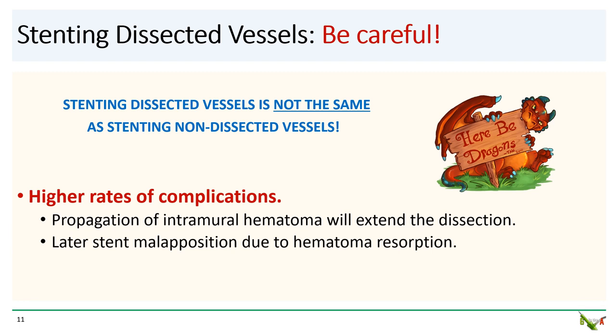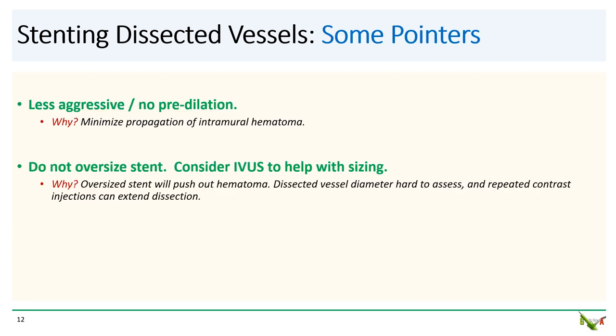Now that you have your wire in the true lumen, all you have to do is stent it up — you're pretty much home free. Well, almost, but you still have to be very careful. Stenting dissected vessels is precarious and is not the same as stenting non-dissected vessels — there is a high rate of both early and late complications. Angioplasty and stenting can cause longitudinal extension of the hematoma and propagate the dissection. Appropriately sizing the stent is important but difficult because of the intramural hematoma, and initially well-opposed stents can become malapposed later as the hematoma resorbs. Predilation should be minimized and, if done, kept at low pressure. You do not want to oversize the stent.